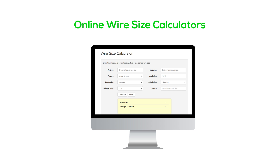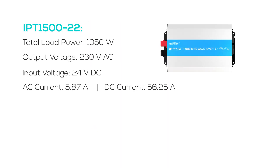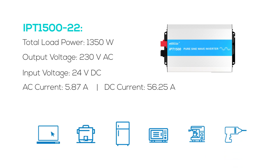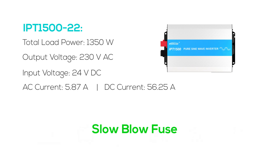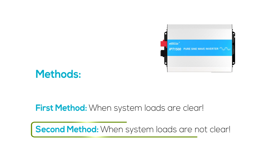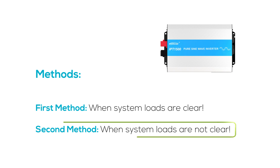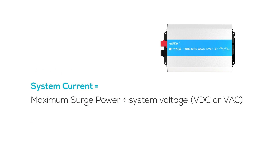When employing the first method where load details are known, it's important to factor in the inrush current of certain appliances to accommodate the initial surge in current and prevent unnecessary fuse trips. Consider using slow-blow fuses, which are specifically designed to handle such transient current spikes.